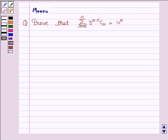Hello and welcome to the session. Let us discuss the following question. It says, prove that summation r running from 0 to n, 3 to the power r into ncr is equal to 4 to the power n.